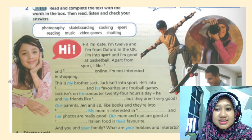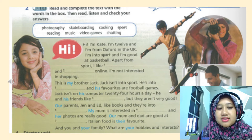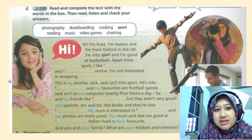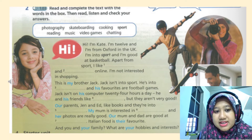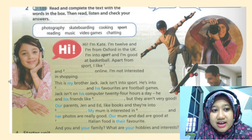Now we're going to do a listening exercise. Read and complete the text with the words in the box, then listen and check your answers. The words in the box are: photography, skateboarding, cooking, sports, reading, music, video games, and chatting. Sports is already given, so the other seven words will be used in this text. Listen carefully and fill in the answers.